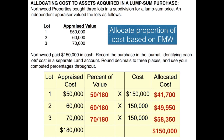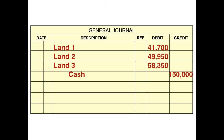Once we have the allocated cost for each item purchased in the lump sum, we can make our journal entry. We're going to debit each lot or piece of land and credit our cash account for that amount.